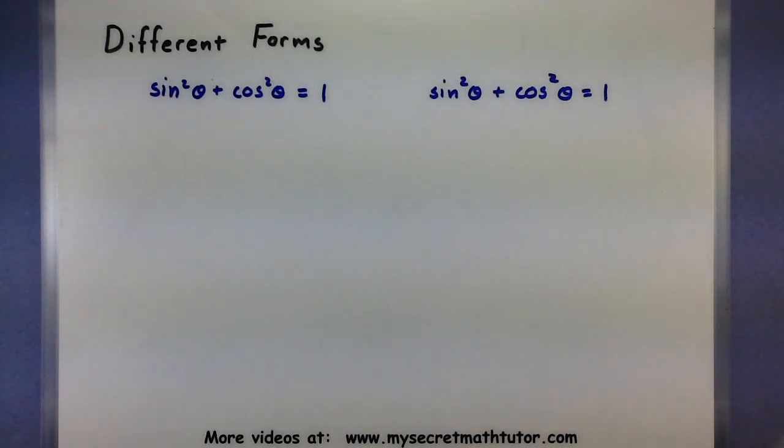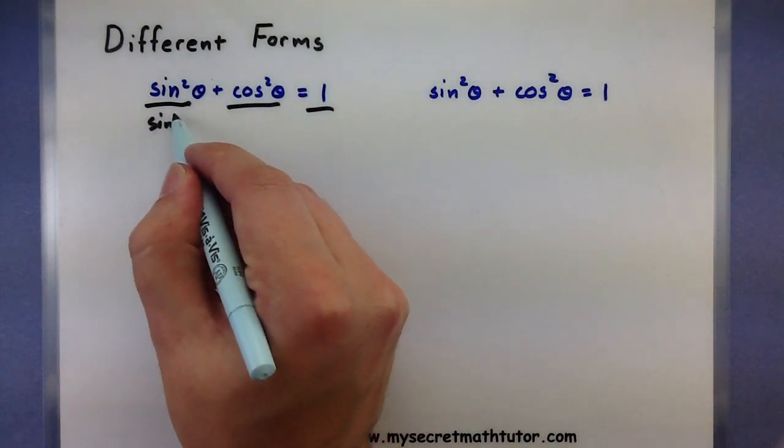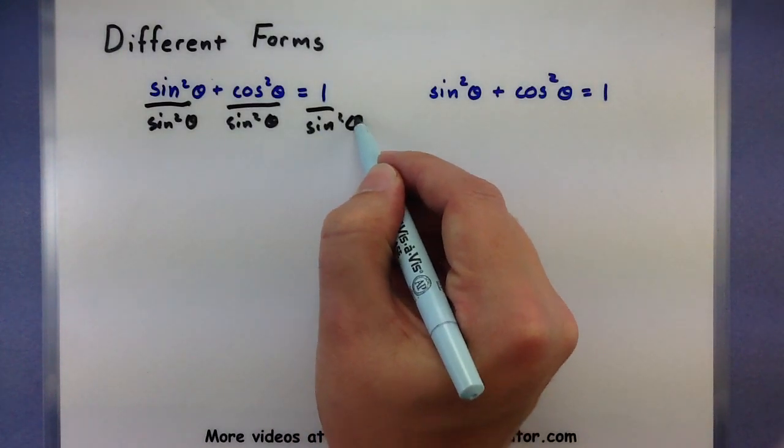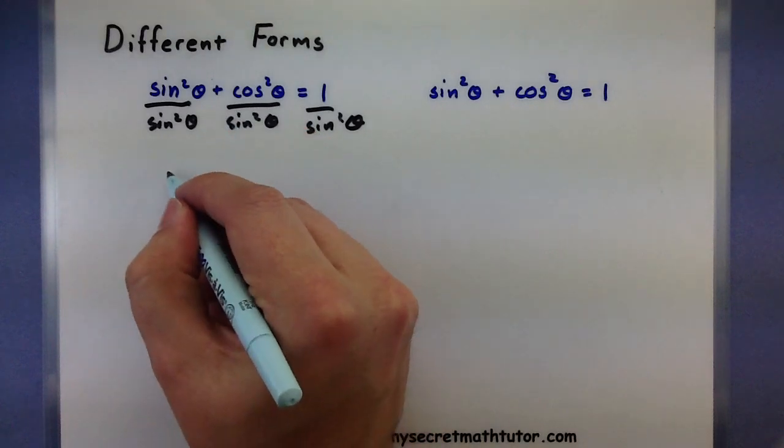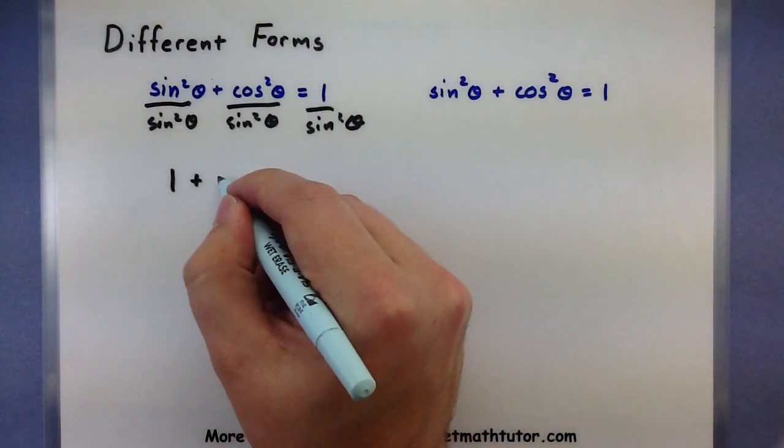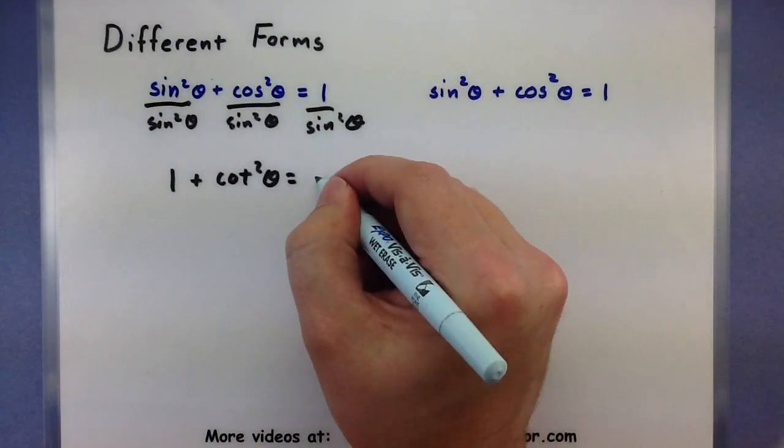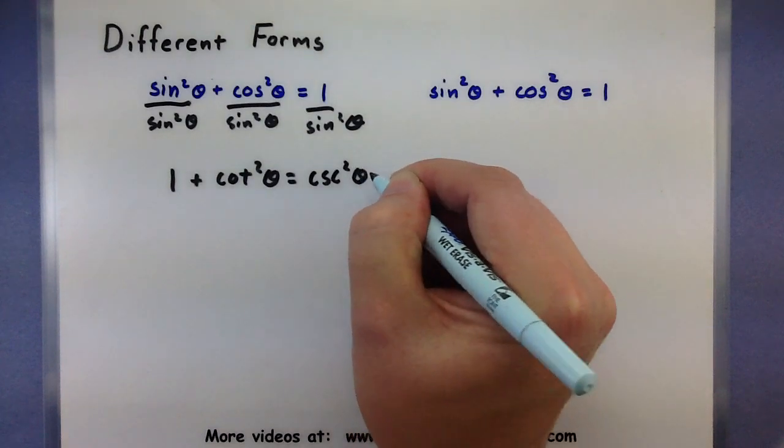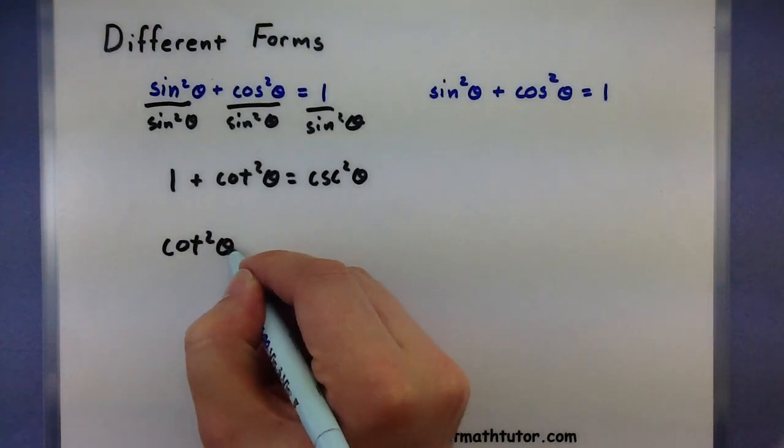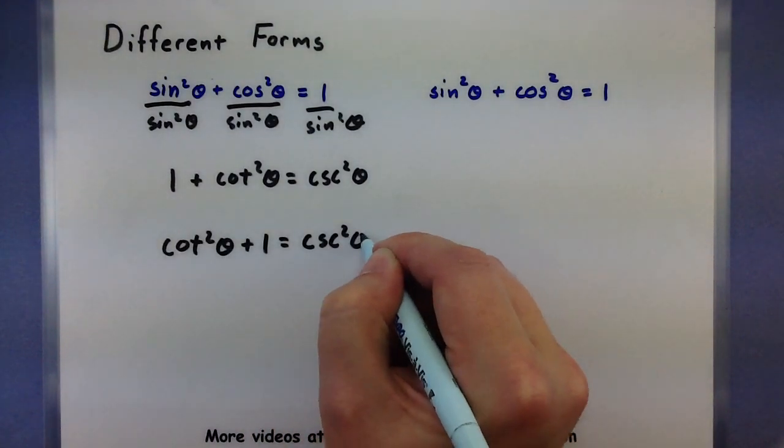So suppose we started with sin²θ + cos²θ = 1, and we went through and we decided to divide everything by sin²θ. Well here I'd have sin²θ over sin²θ, so that's equal to 1. Here I'd have cos² over sin², so there's our cotangent. And lastly I'd have 1 over sin², that one would be our cosecant squared. So here's one of those other forms, and you can see all we had to do was build it from the sin² + cos². Let me go ahead and rearrange it so it's a little bit more familiar.